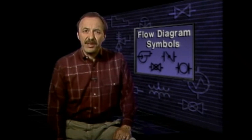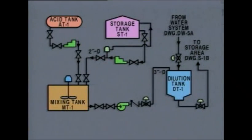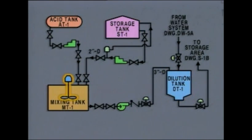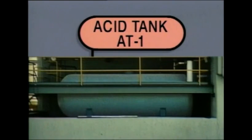A good way to start reading any type of diagram is to become familiar with the symbols on it. We'll take a look at some common process flow diagram symbols and the equipment they represent. This is a flow diagram for a mixing and dilution system. These symbols all represent tanks. The symbol for a mixing tank includes a motor and mixer blades. Diagram symbols are often drawn to represent a certain view of the equipment — for example, the symbol for an acid tank resembles a side view of the tank.